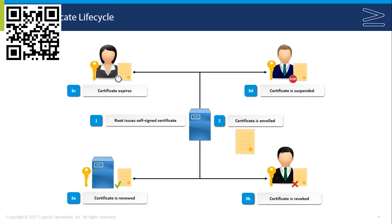Step two is enrollment — users and other entities are obtaining certificates. Step three is renewal; these certificates may need to be renewed more than once depending on policy parameters. Revocation can happen when you have to revoke a certificate before its normal expiration date, rendering the certificate permanently invalid. Reasons for revoking certificates may include obtaining one fraudulently, misuse of a certificate, compromise, loss of trust — like a user leaving the company — and so on.